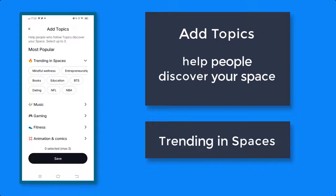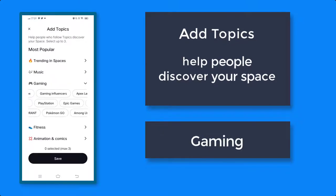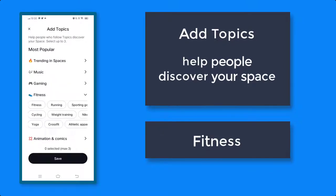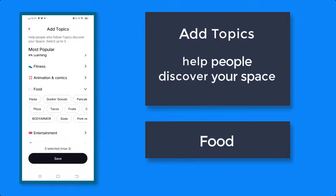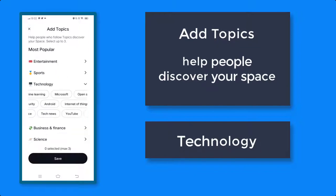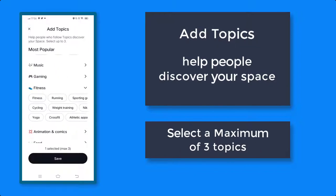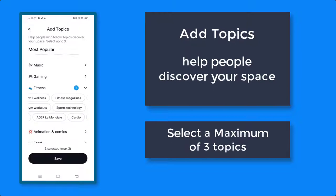You can add what is trending in Spaces: Music, Gaming, Fitness, Food, Entertainment, Technology, Business, and more. You can select a maximum of three topics.